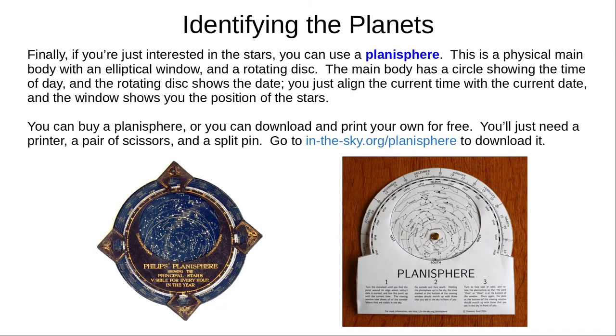Finally, if you're just interested in observing the stars tonight, you can use a planisphere. This consists of a physical main body with an elliptical window and an inner rotating disk. The main body has a circle annotated with the time of day, and the disk is annotated with the date. When you align the current time with the current date, the window shows you the positions of the stars currently above the horizon. You can buy a professional quality planisphere, or download and print your own for free with just a printer, a pair of scissors, and a split pin. See the link in the description.